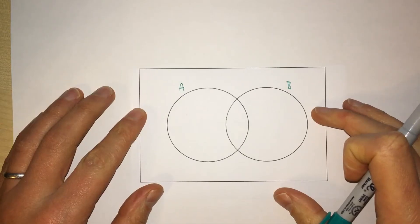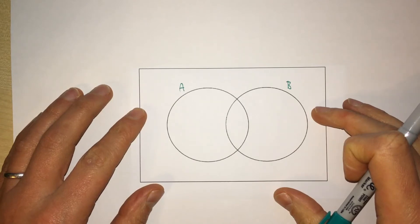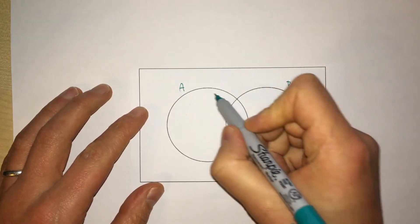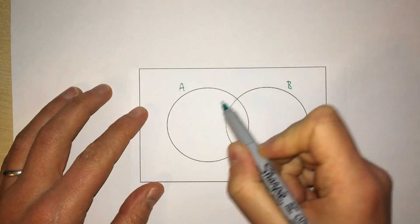A Venn diagram shows the relationship between sets. In a Venn diagram, a set is usually represented by a circle. Here we have two circles.